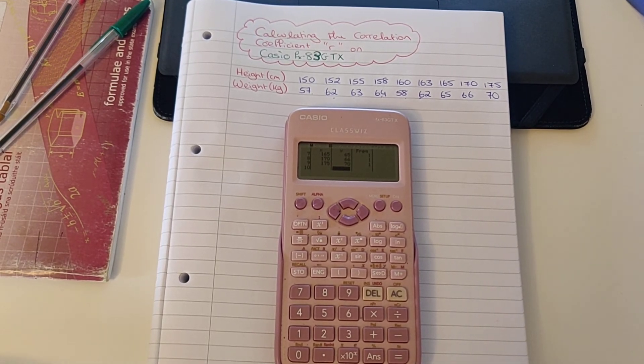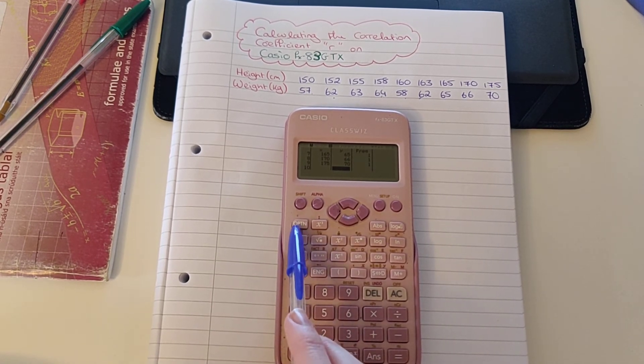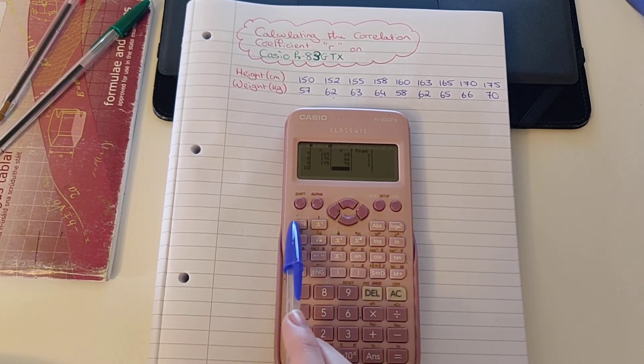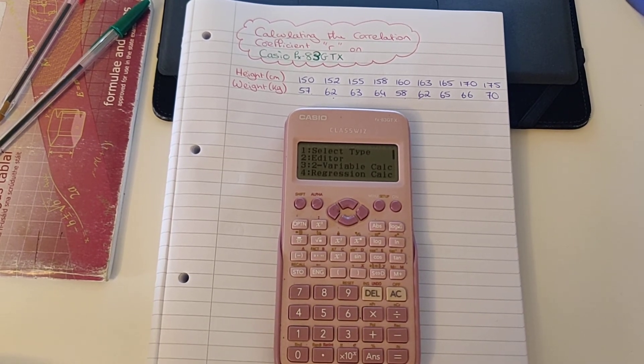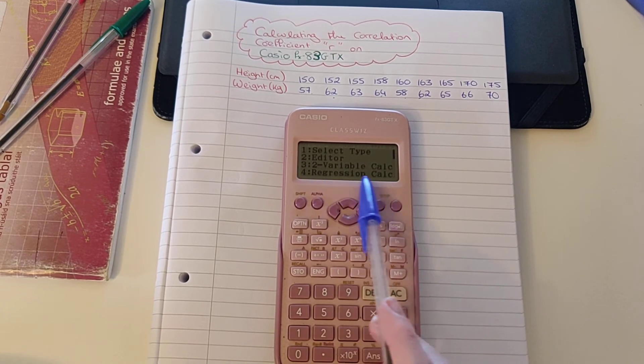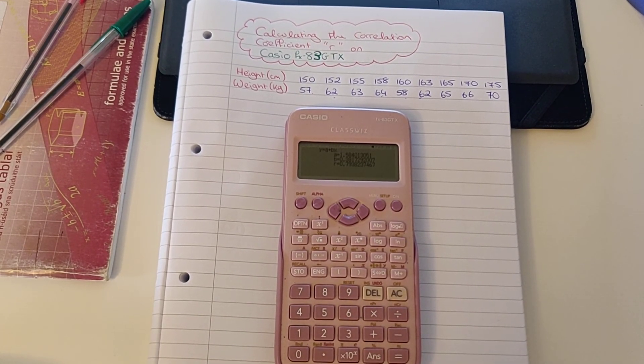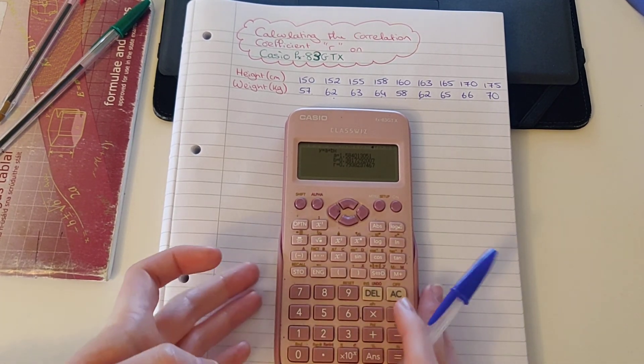The next thing we're going to do to find our correlation coefficient is press the option button, OPTN, underneath the shift button. And when I do that, I'm given different options. To calculate our correlation coefficient, we're going to use 4, the regression calculator. So we press 4.